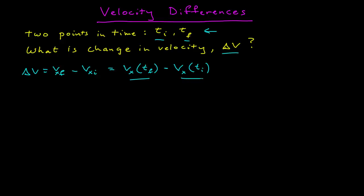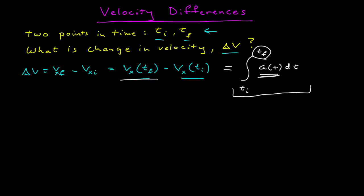Wait a minute, this looks familiar. If v is the anti-derivative of some function, the difference of the anti-derivative evaluated at two endpoints is equal to the integral of that function between those two times. So applying the fundamental theorem of calculus, the difference of the anti-derivative evaluated at the endpoint minus the anti-derivative evaluated at the initial point gives us the definite integral.